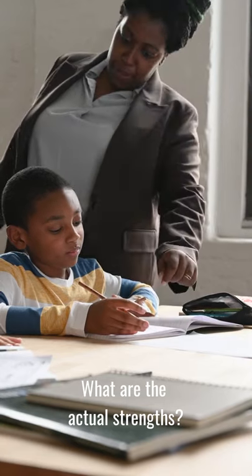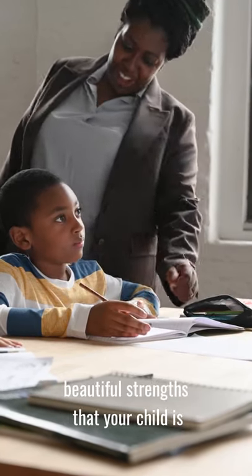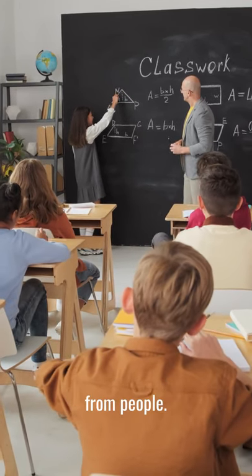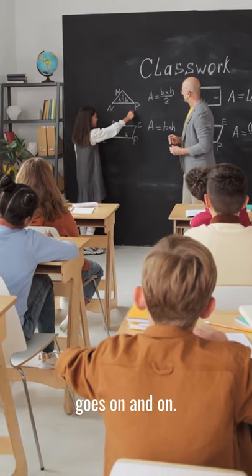What are the actual strengths? Because your child has some amazing, beautiful strengths that your child is probably doubting at this point. All the feedback that they've been getting from people, this is what happens over time if it goes on and on.